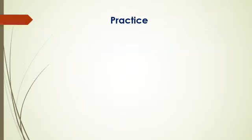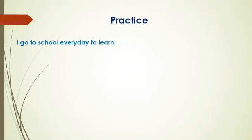These are the finites and non-finites. Finites depend on subject and tense. Non-finites don't depend on subject and tense — they remain the same in all cases. Non-finites are three types: participles, to-infinitives, bare infinitives, and gerunds. Now let us see some practice sentences. First: 'I go to school everyday to learn.' What is the finite? The finite is 'go'. What is the non-finite? The infinitive is 'to learn'.